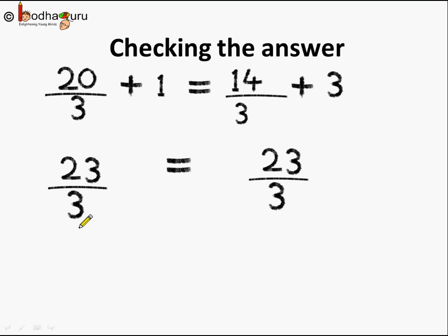What do you see? 23 by 3 is equal to 23 by 3. LHS here is equal to RHS. Hence we prove that the solution is right. So now you know how to solve a linear equation when variable is present on both the side.